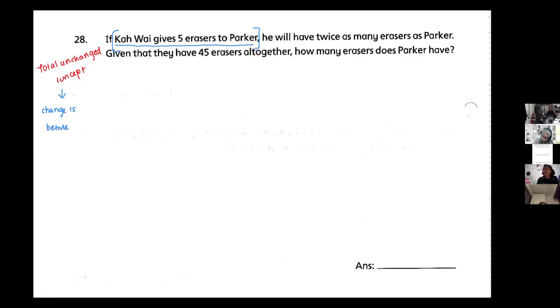So you know that when it is Total Unchanged Concept, the BCA must be found first. So let's start. If Kawai gives five erasers to Paka, he will have twice as many erasers as Paka.